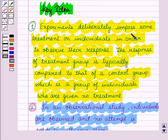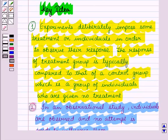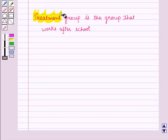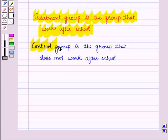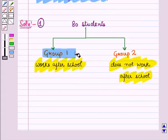From the key idea, we also know the response of the treatment group is typically compared to that of a control group, which is a group of individuals who are given no treatment. So here, the treatment group is the group that works after school, and the control group is the group that does not work after school. So group 1 is the treatment group and group 2 is the control group.